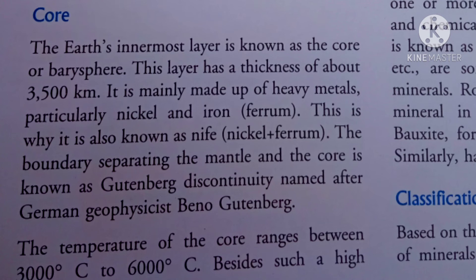The Earth's innermost layer is known as the core. This layer has a thickness of about 3,500 km. It is mainly made of heavy metals, particularly nickel and iron. The boundary separating the mantle and the core is known as the Gutenberg discontinuity, named after German geophysicist Beno Gutenberg.